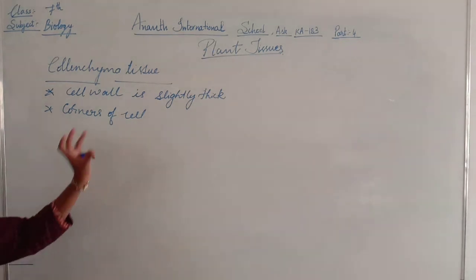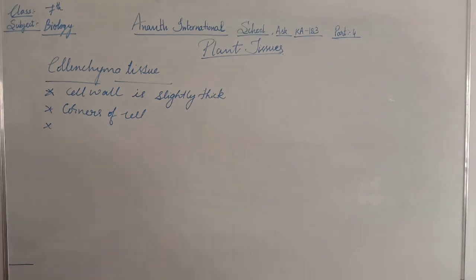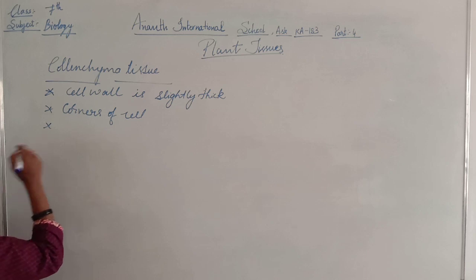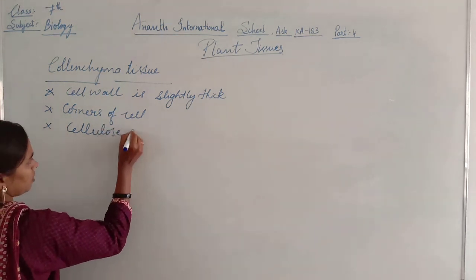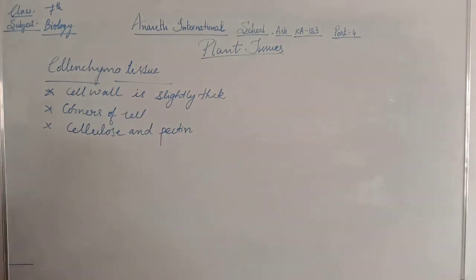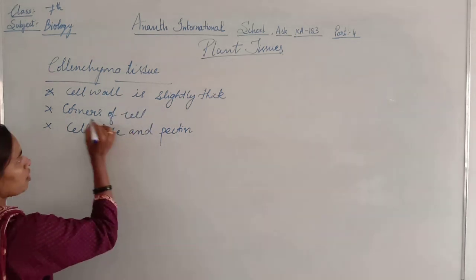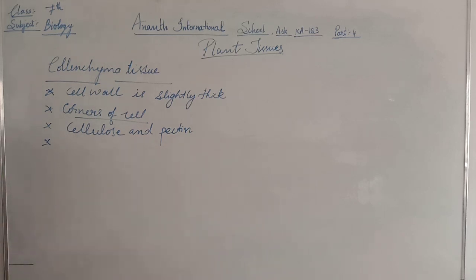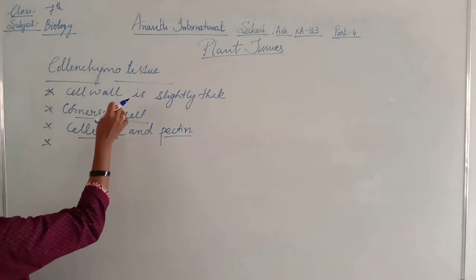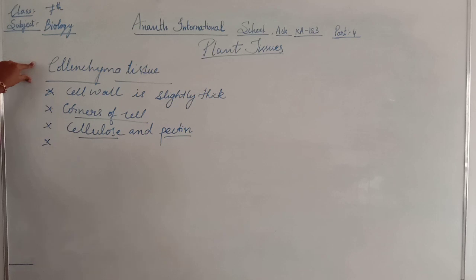The cell wall is thick only at the corners of the cells. These cells are made up of cellulose, and at the corners the wall is thick due to the presence of cellulose and pectin. Cellulose is a polysaccharide unit — essentially a glucose unit. Pectin is a kind of carbohydrate. These two together make the corners of the cells thick in collenchyma tissue.